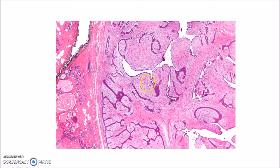This picture shows the histology of Phyllodes Tumor. Note the characteristic long clefts and myxoid cellular stroma.